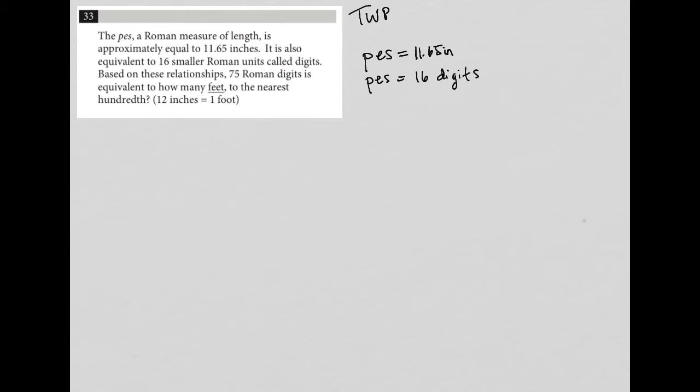which means, right? So if we read between the lines a little bit, this means that 16 digits is equal to 11.65 inches. And because that's a weird way of measurement, I want to know what one digit is equal to. So if I divide by 16 on both sides, I can take my calculator and I can give you the decimal for how these relate to each other.